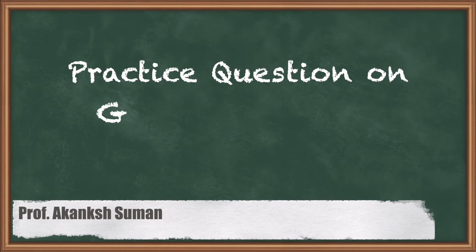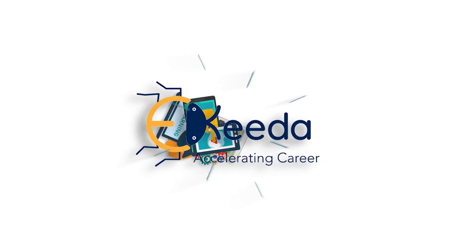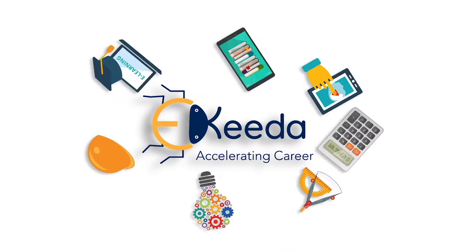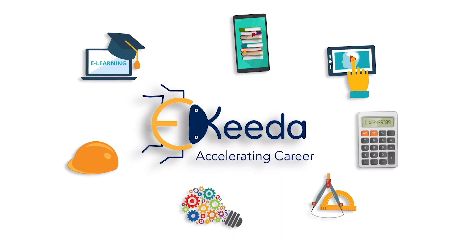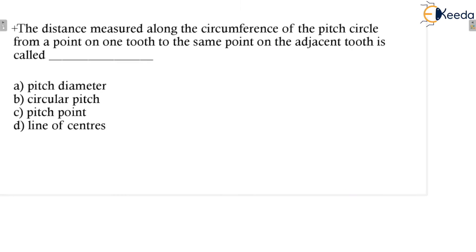Hello everyone, now we are going to discuss questions of gear terminology. The distance measured along the circumference of the pitch circle from one point on one tooth to the same point on the adjacent tooth is called what?